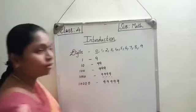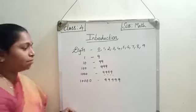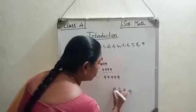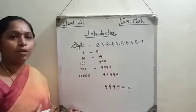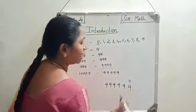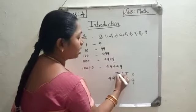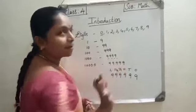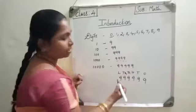When I say 99,999, we should know — when we are writing the numbers — we should know the place values and face values. The place values start from ones: 1, 10, 100, 1,000, 10,000, and lakh.